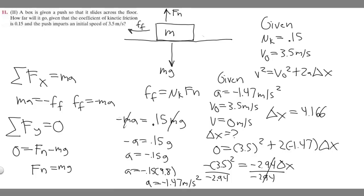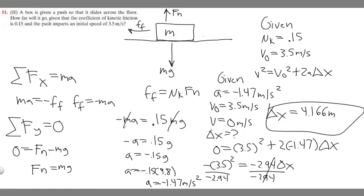Let me double-check: 3.5 squared divided by 2.94 gives 4.166, so it's actually 4.166 — or rounding, 4.66 meters. The distance the box is going to travel is 4.166 meters, and that's your answer to this problem. Hopefully you found it useful.